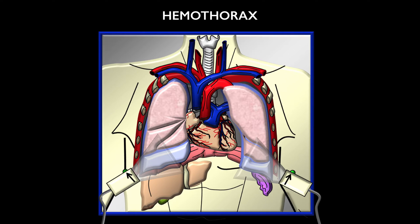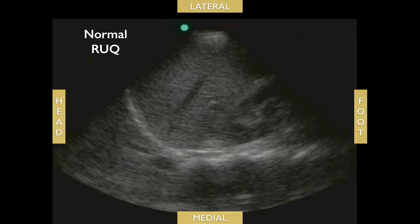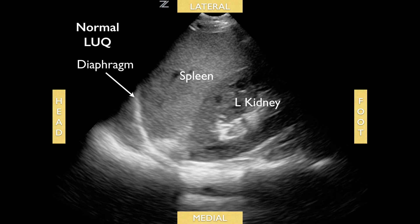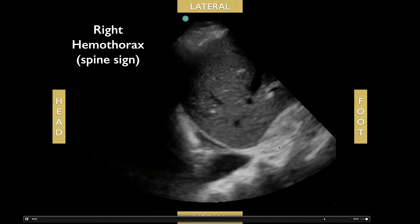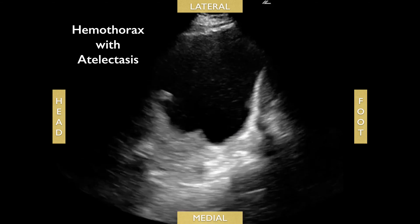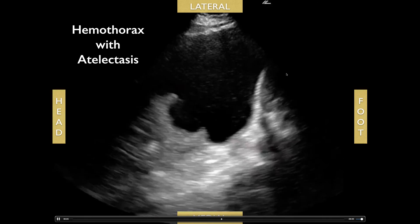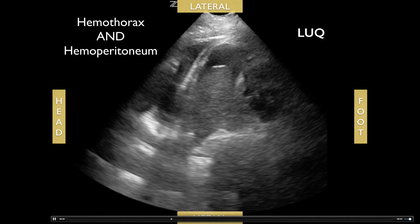While performing the left upper quadrant and right upper quadrant views, you also want to rule out hemothorax. Just look right above the diaphragm in the lung space. In a right upper quadrant view, look above the diaphragm for free fluid. In a left upper quadrant view, look above the left diaphragm. Here's a patient with a right hemothorax — note the spine sign, with the spine visible past the diaphragm, and an anechoic area indicating fluid in the chest. You can also see a patient with both hemothorax and perisplenic fluid.